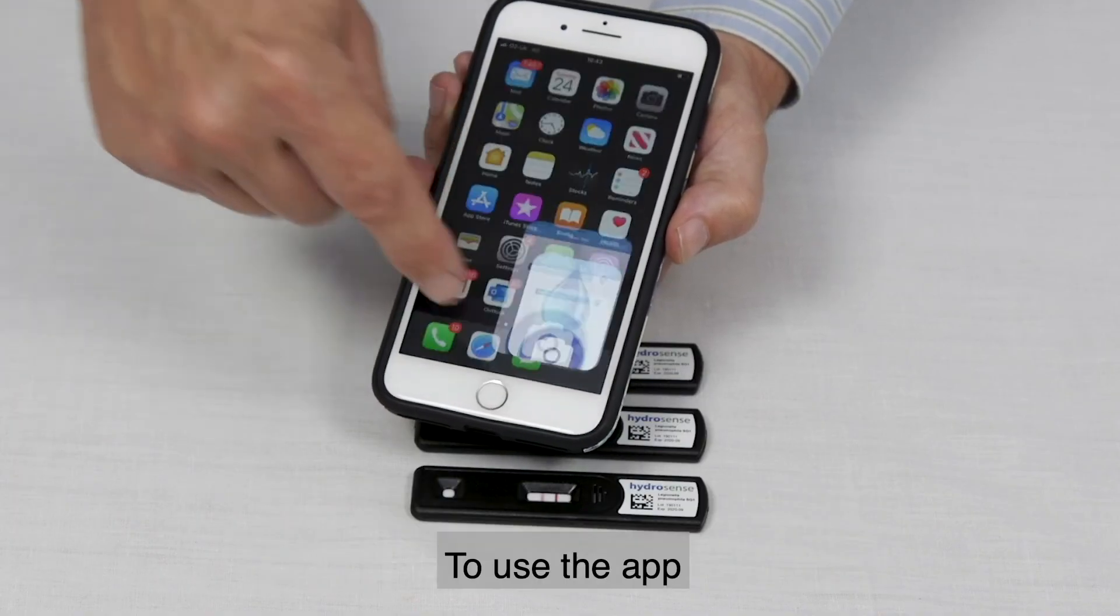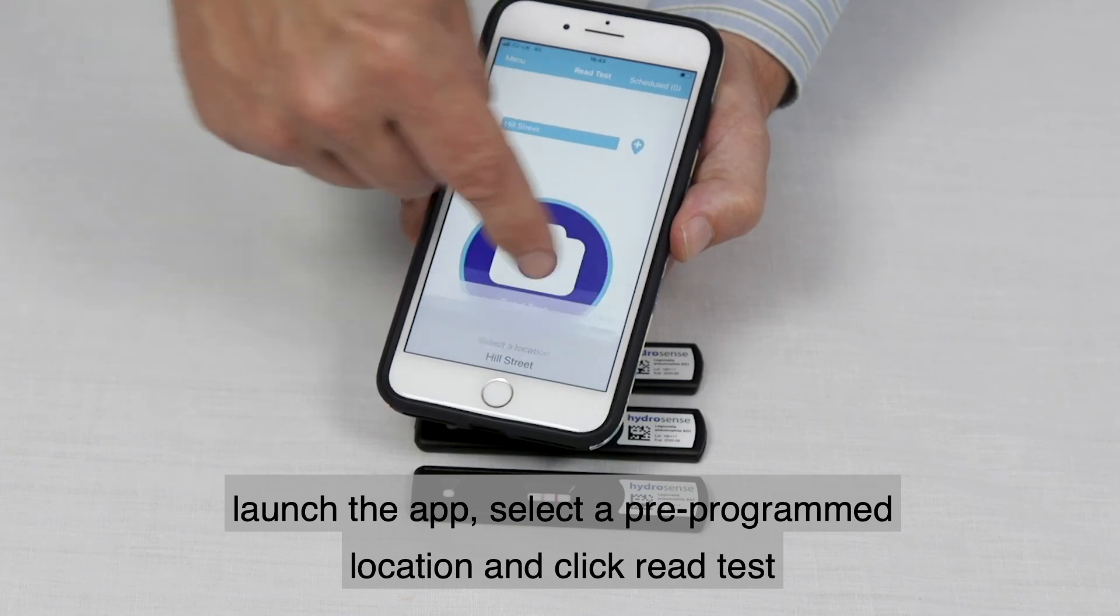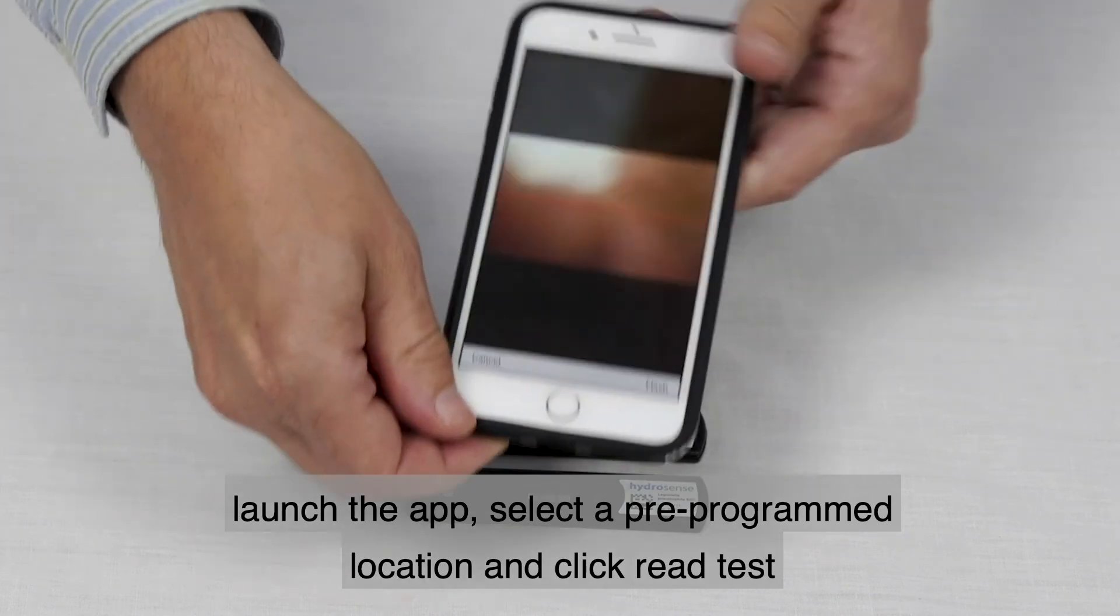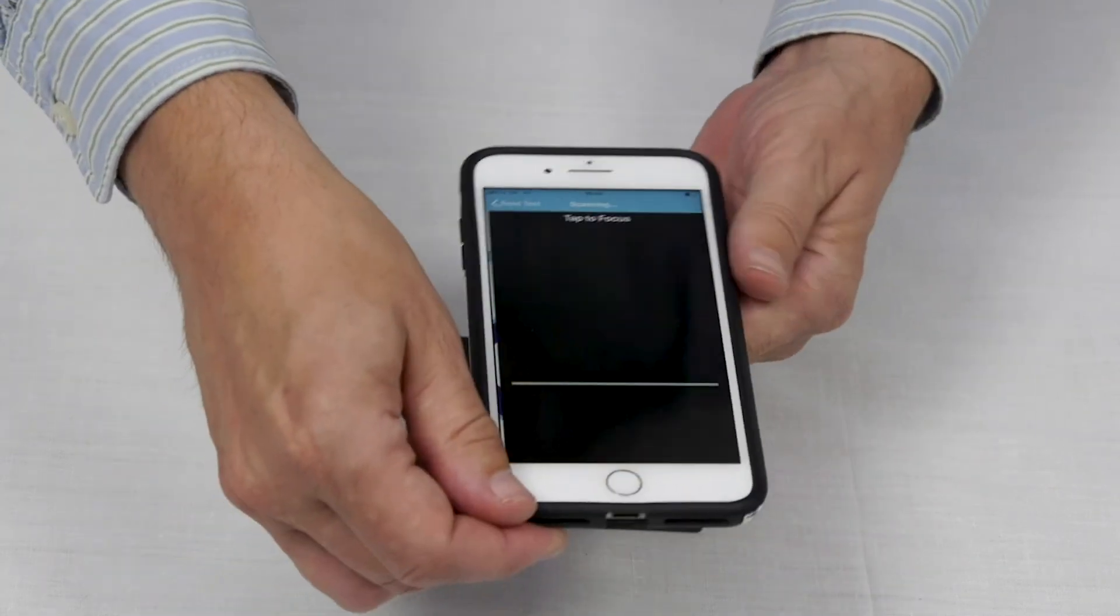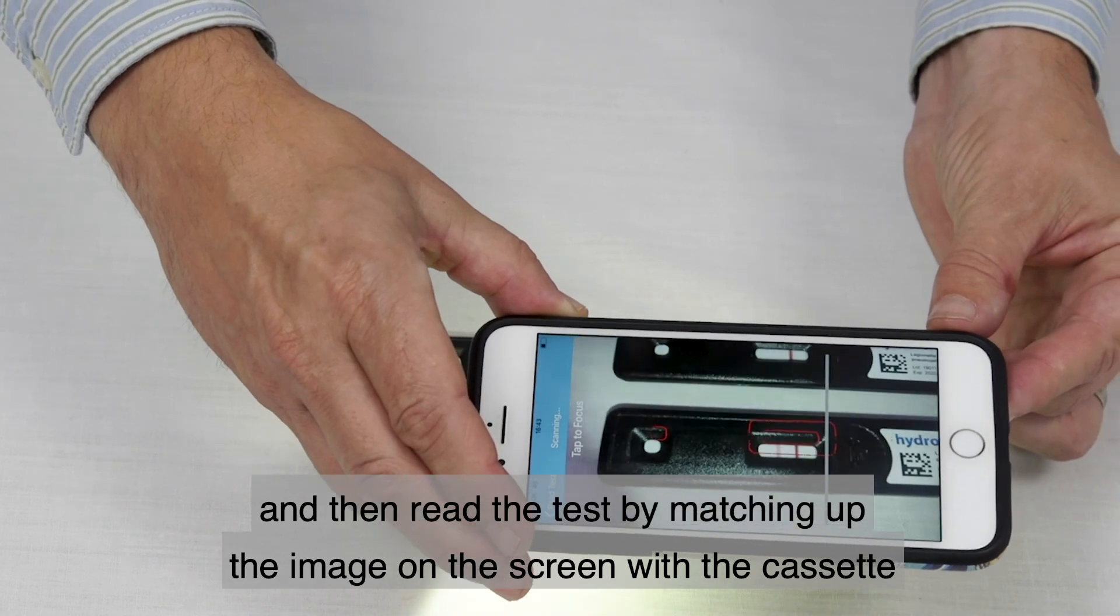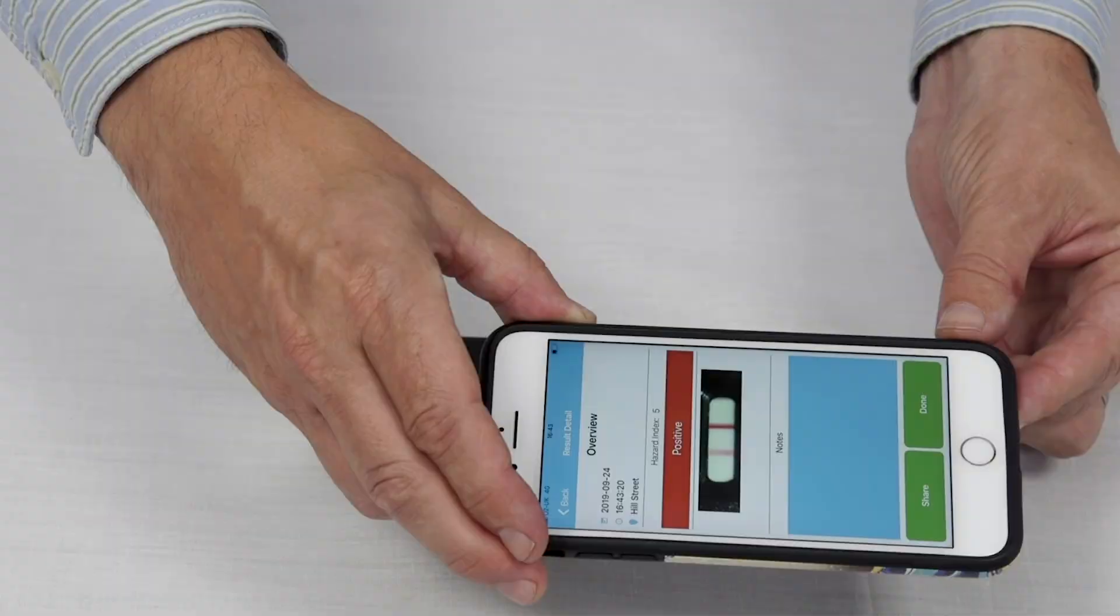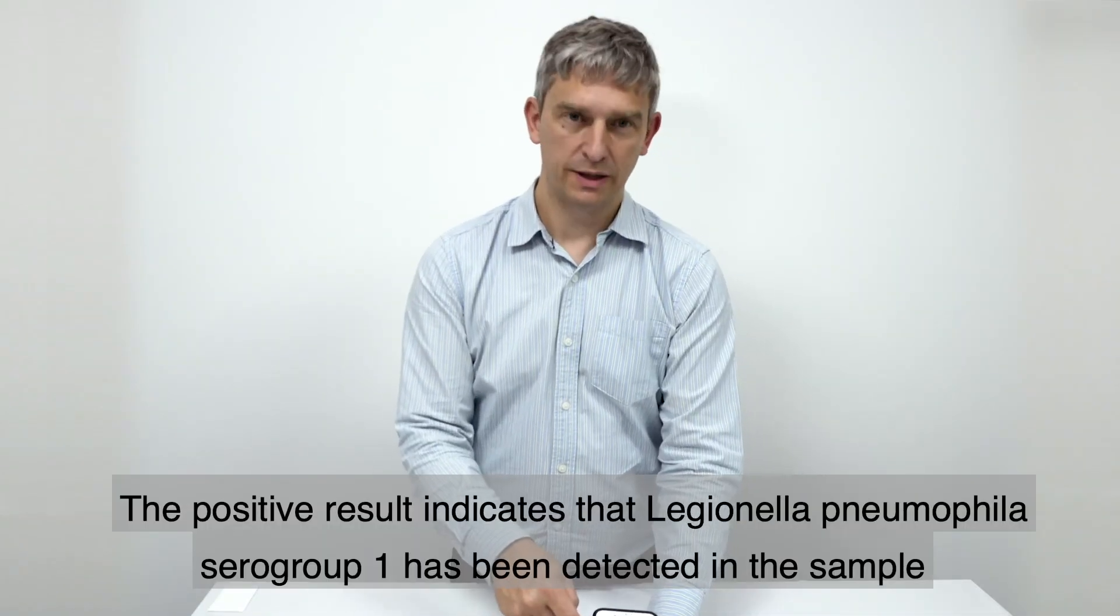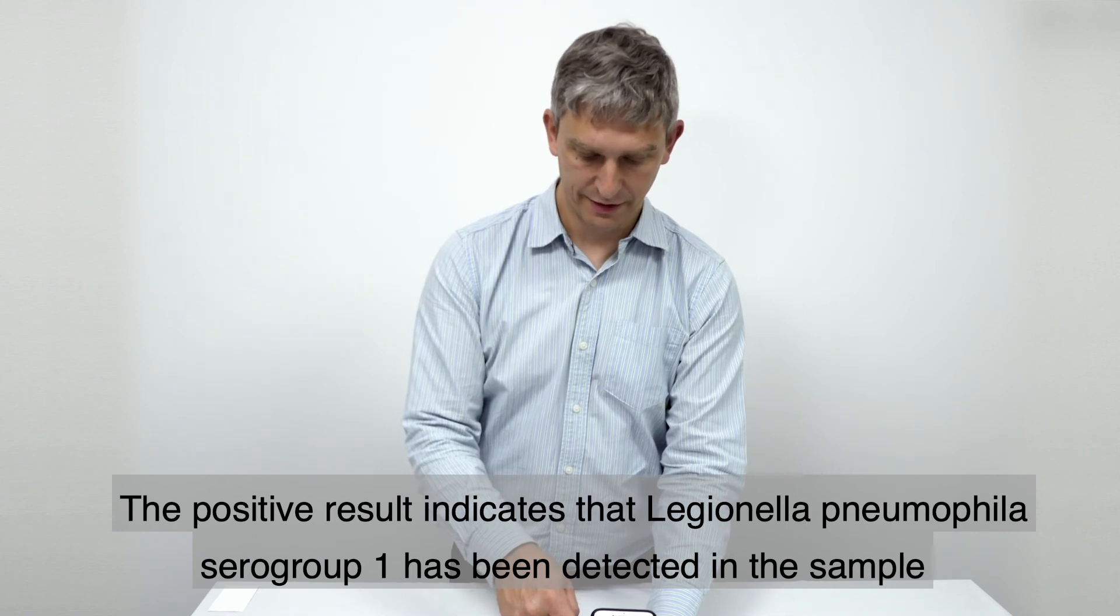To use the app, launch the app, select a pre-programmed location and click read test. Scan the barcode, and then read the test by matching up the image on the screen with the cassette.